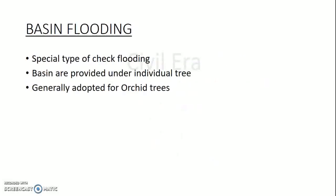The next method is basin flooding. It is a special type of check flooding in which basins are provided under individual trees. This method is generally adopted for orchard trees.